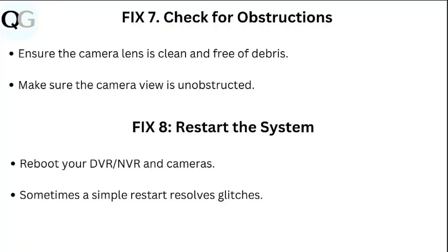Step seven: check for obstruction. Ensure the camera lens is clean and free of debris. Make sure the camera view is unobstructed. Step eight: restart the system. Reboot your DVR or NVR and cameras. Sometimes a simple restart will resolve glitches.